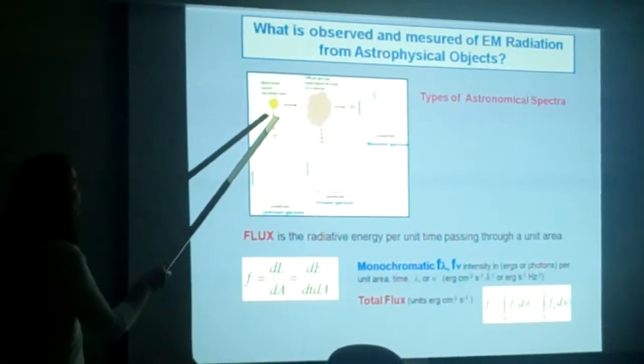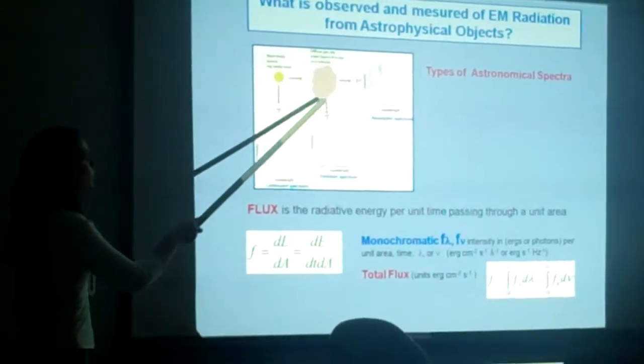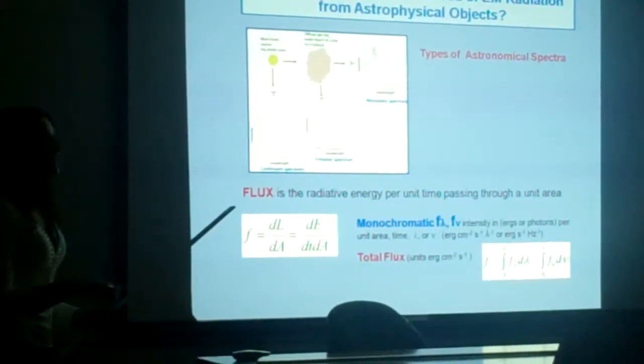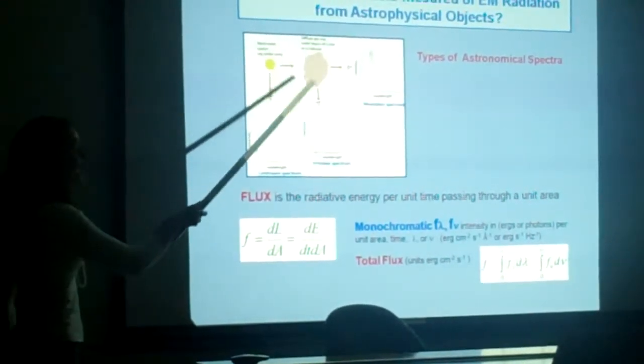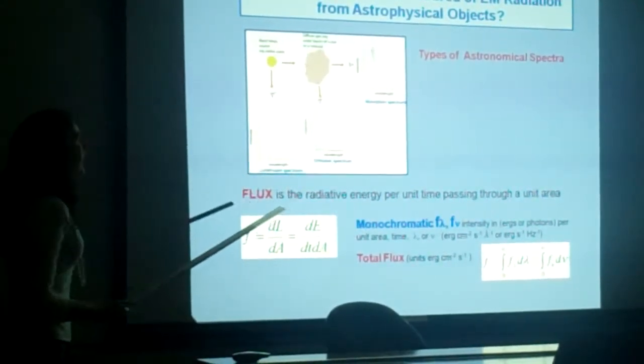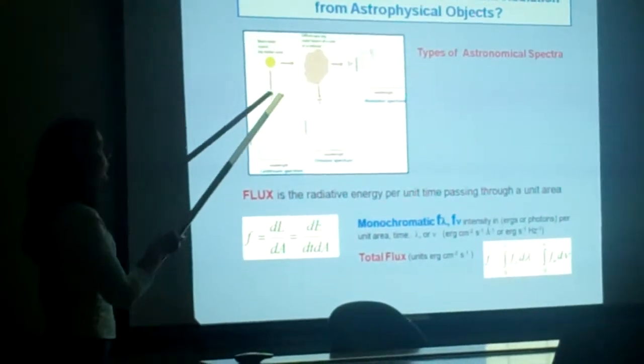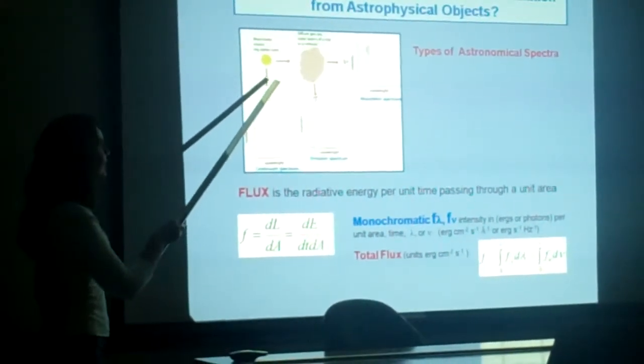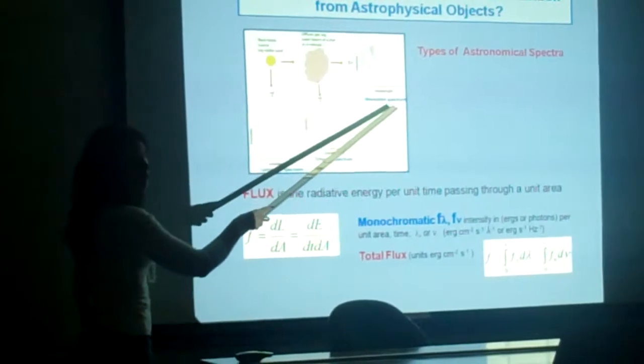But if we look to the star through the gas, a lot of stars have a cloud of gas around. In this case, the gas absorbs the photons coming from the stars, and we can see an absorption spectrum.